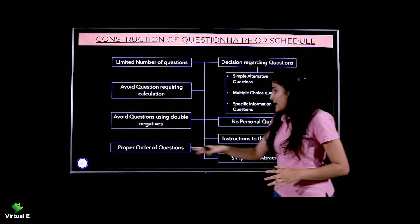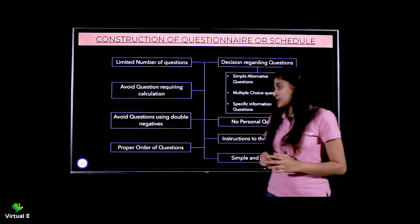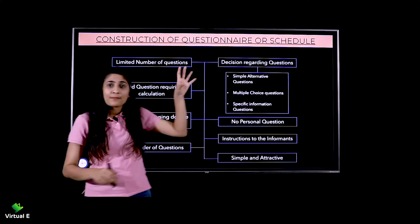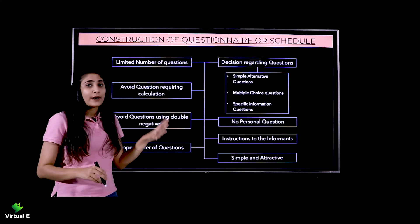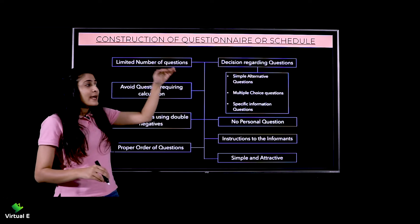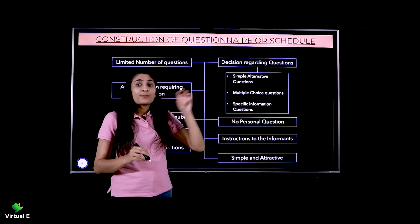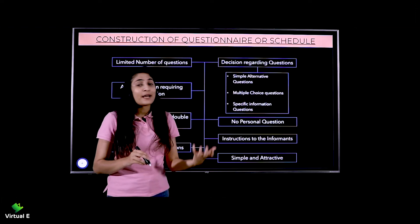Next is proper order of questions. There should be a proper order - first ask name, age, gender, address, whatever you want to ask. Then you can jump to the related information, the topic you're actually collecting information about, and start asking questions regarding that.